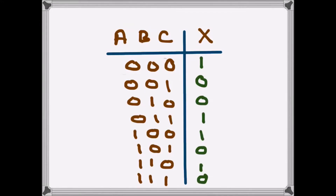This is an implementation of a three-variable sum of product expression using a four-by-one multiplexer. We have a four-by-one multiplexer and we need to implement this truth table, which is a three-variable sum of product expression. I have done this problem before, but I will do it a bit differently now.